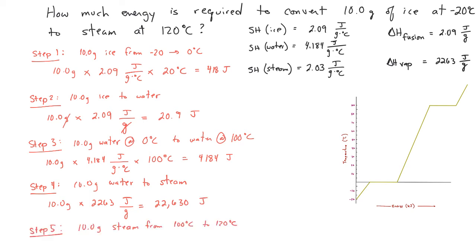Step five is converting 10 grams of steam from 100°C to 120°C. For that step we use the specific heat of steam: 10 grams times 2.03 joules per gram per degree Celsius, times the temperature change of 20 degrees Celsius. Our answer for step five is 406 joules.